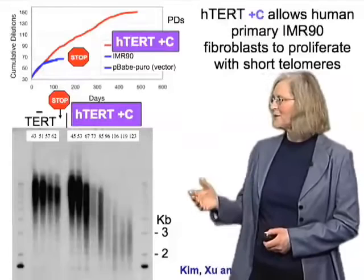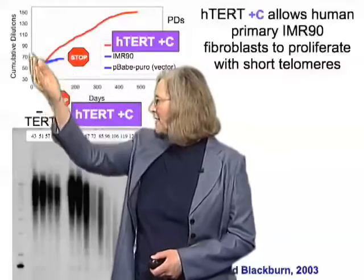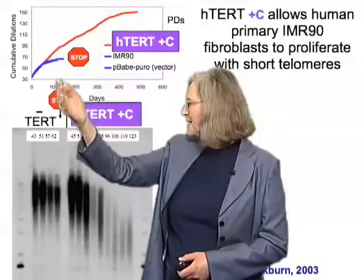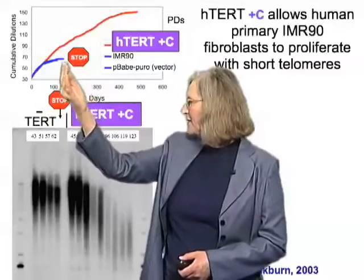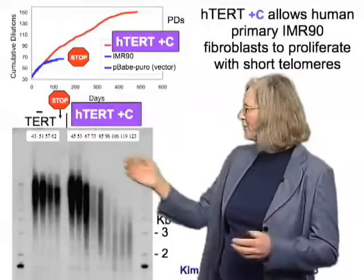Here's the experiment. First, I want to show you a growth curve of human fibroblasts in culture. The y-axis is cumulative dilutions — an operational term telling you how many cell divisions are going on — and the x-axis is the number of days. If you culture human fibroblasts, normally the cells will continue to multiply for a while and then cease multiplying, so the curve flattens out after something like 50 or so divisions. If you put in a control vector, you'll get the same curve.